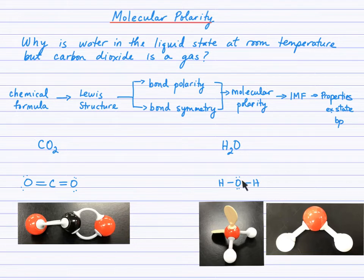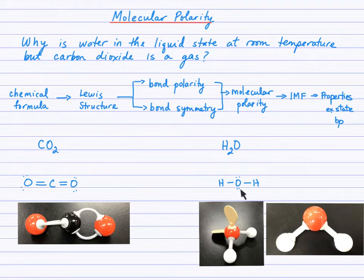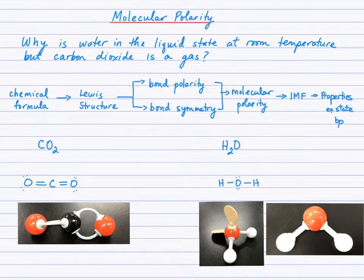It's actually the presence of the lone pairs that causes the shape of the water molecule to be bent — that's the key difference. Without formally studying VSEPR shape, which we do in grade 12, it's enough at this point to notice that the presence of lone pairs causes asymmetry in the molecule in terms of the bonding. Here the bonds are 180 degrees apart, but in water, lone pairs force the bonded pairs closer together, giving a bent shape instead of the linear CO2.